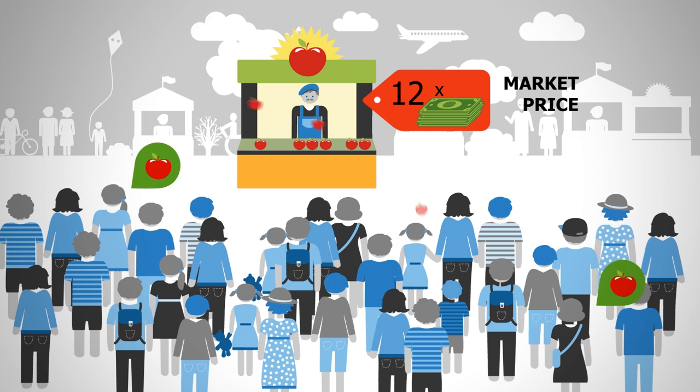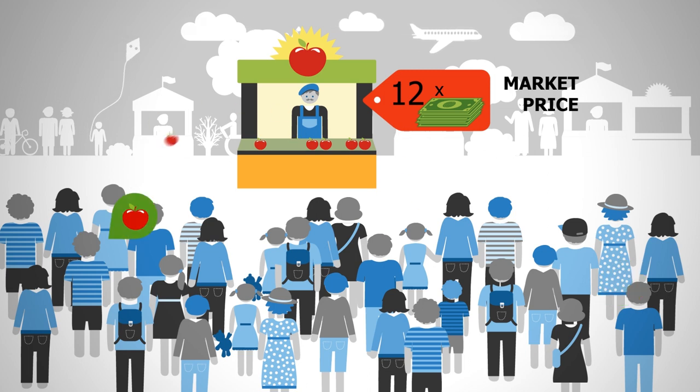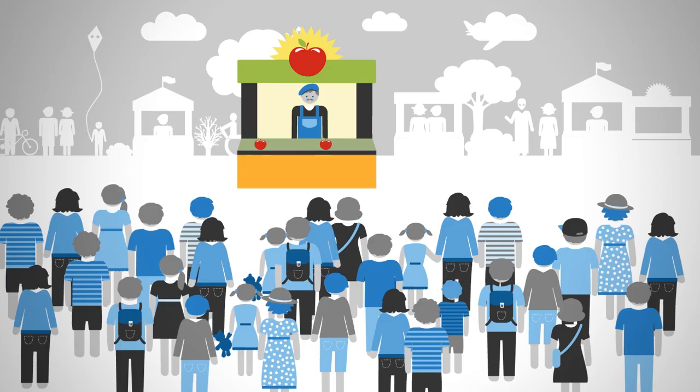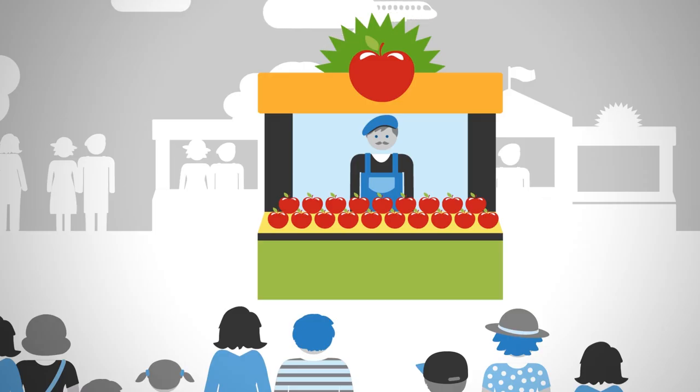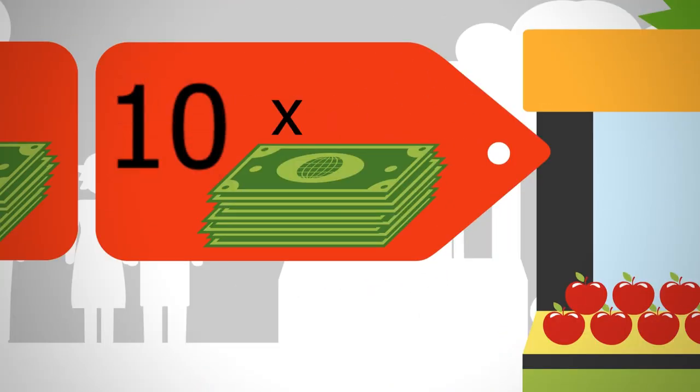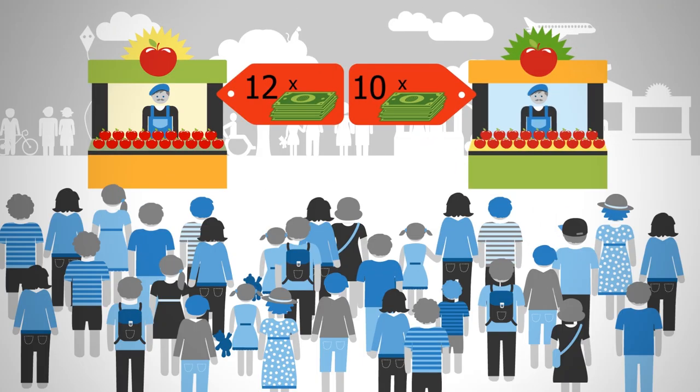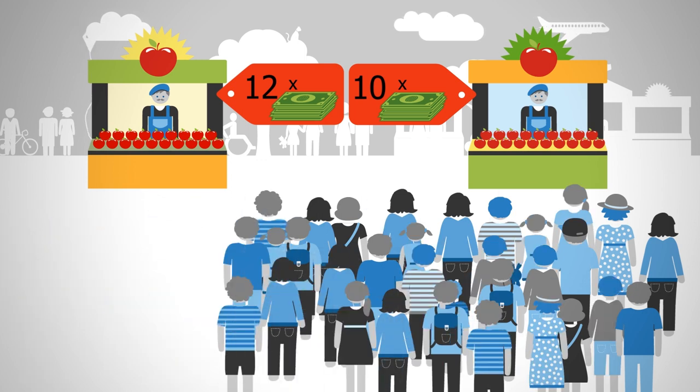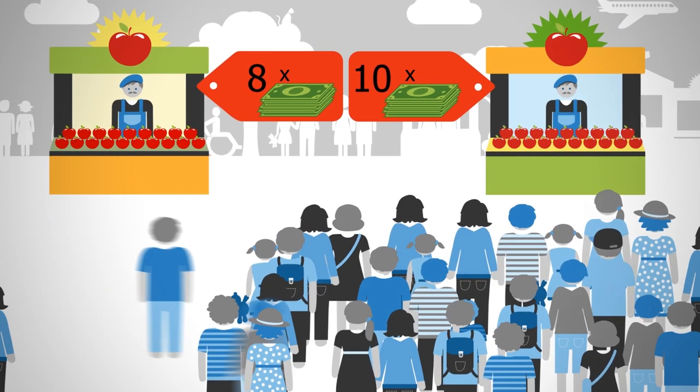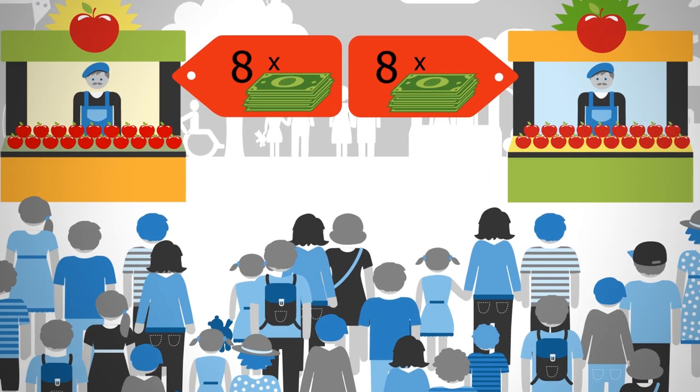But things don't stay like this forever. If the supply of apples increases, the price will likely go down again. Take, for instance, another market stall owner coming into the market offering more apples. His strategy to get into the market will be to offer apples at a lower price. More and more people will buy apples from the new stall, and so the first one will have to reduce its price in order to compete.